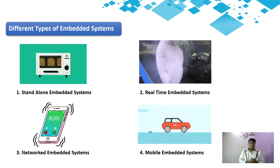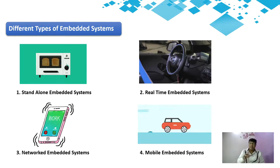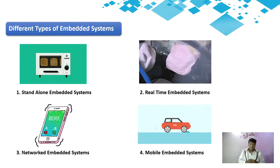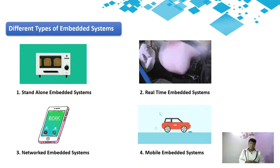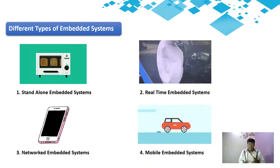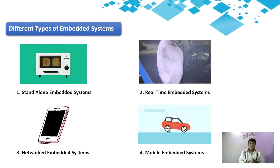The second type is the real-time embedded system. As the name suggests, they are time-critical systems that must meet specific deadlines. If they fail to do so, the system is said to have failed. An example is an airbag control system. Imagine an accident occurring — if the car airbag doesn't open at the specific time, it may create a threat to human life. So these systems are called real-time embedded systems.